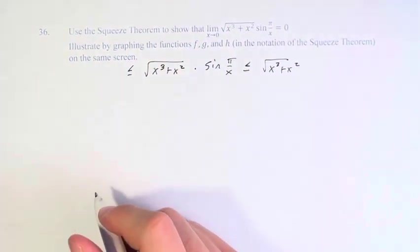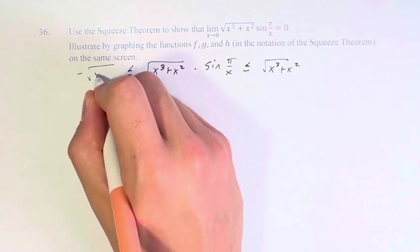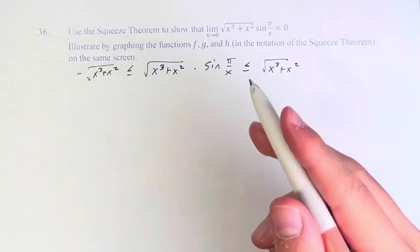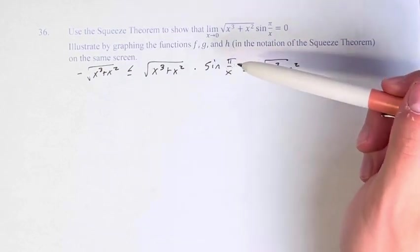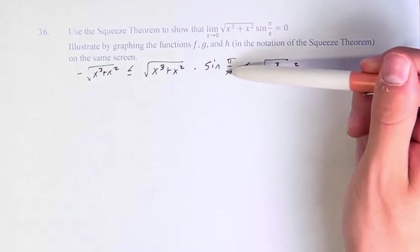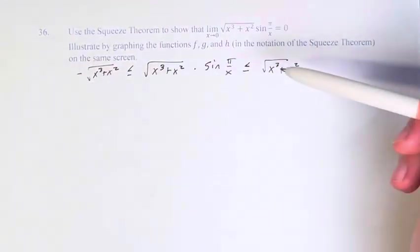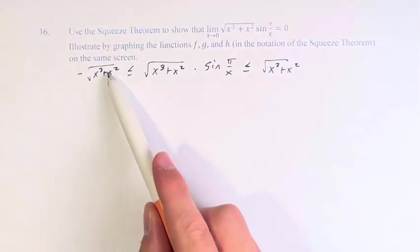However, it's greater than or equal to negative square root of x cubed plus x squared. Because if sine of some value of x is equal to negative 1, then these are equal. And in all other situations, this is going to be less.